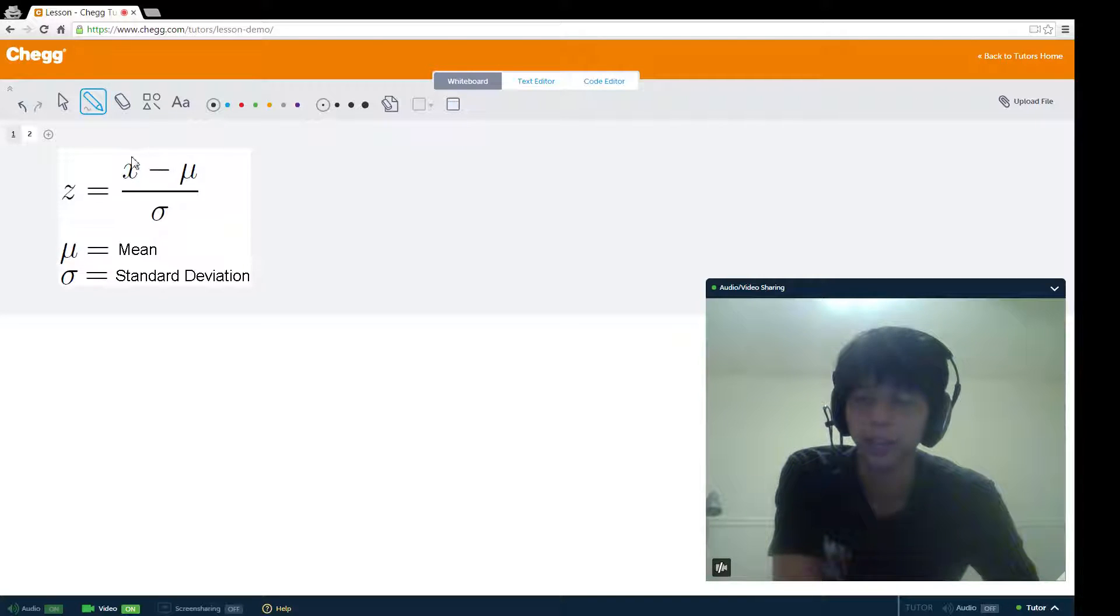The x represents the one observation that you're going to be dealing with out of the population. The μ represents the mean of your population. And then the denominator represents the standard deviation of the population, σ. These three things you must know in order to calculate your z-score.